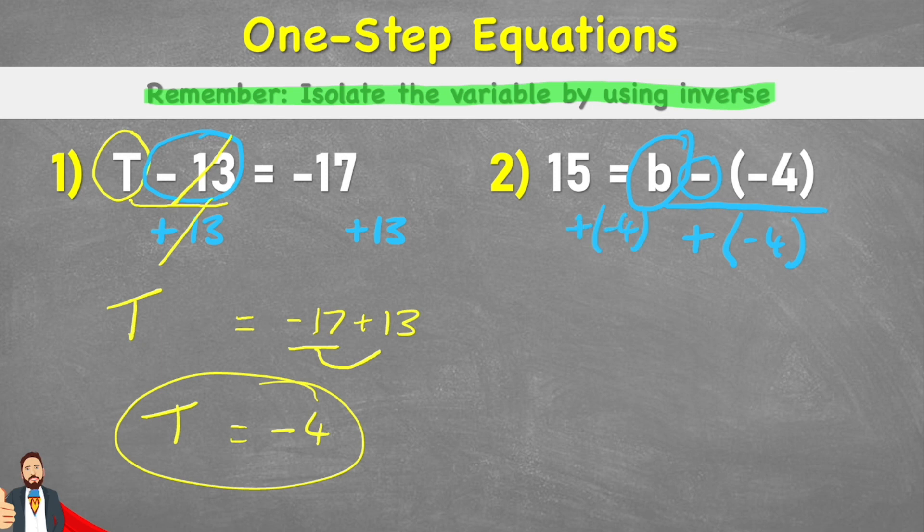So now I can look back at this right-hand side, and I can see that my subtract negative 4 and my plus negative 4, they're going to cancel each other out. And I'm just going to be left with b on its own. So therefore, b equals 15 plus negative 4.